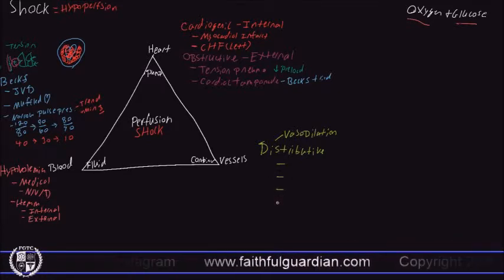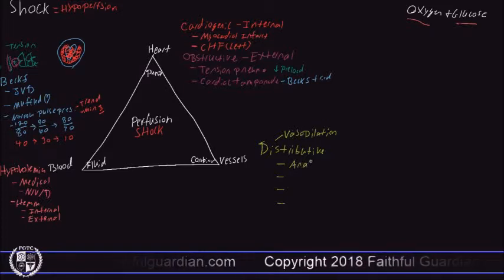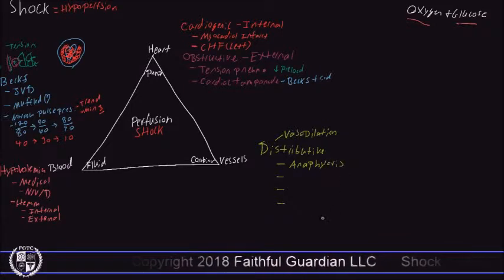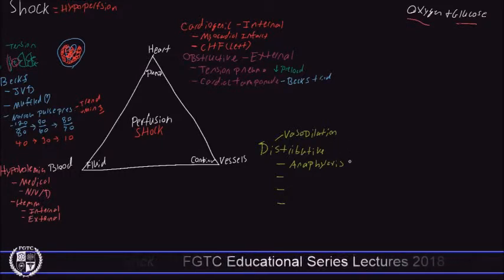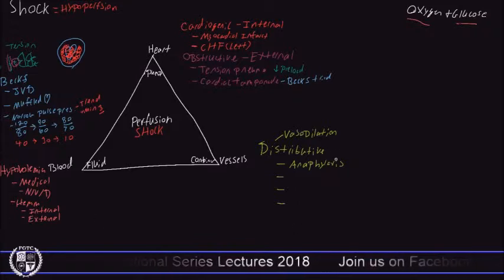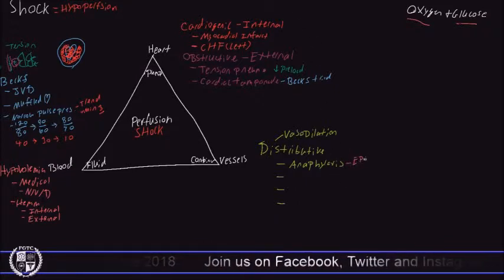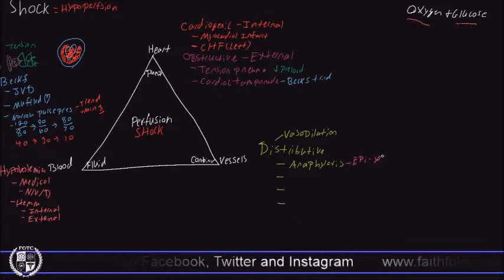There are four main forms of distributive shock. The first is anaphylaxis — an exaggerated allergic reaction that causes widespread vasodilation as the body tries to fight the infection, due to macrophages and histamine release. To help treat the patient, give epinephrine, which causes vasoconstriction due to its alpha-1 effects.